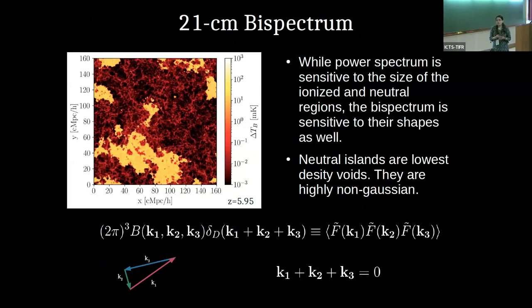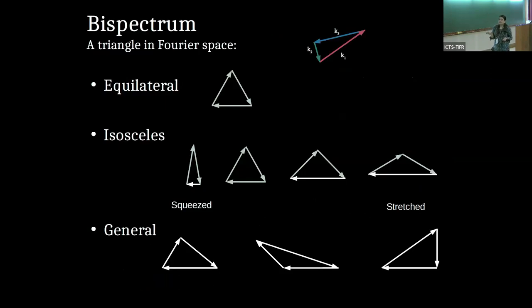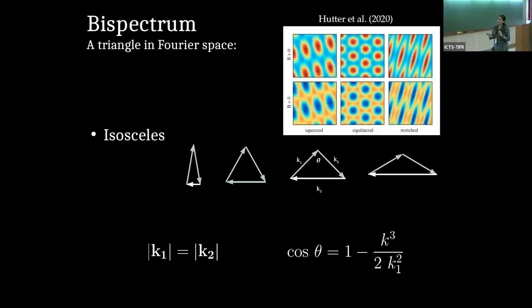So with this encouraging results, we then turn to higher statistics. Because this power spectrum is sensitive to the scales of the neutral and ionized regions, bispectrum is also sensitive to their size and shapes, which means that we will be able to extract more information about the geometry of this time period compared to power spectrum. And also, one another motivation is that towards the end of the reionization, the neutral islands which are left are the lowest density voids, which means that they are expected to be highly non-spherical, non-gaussian, and we expect them to have very unique bispectrum signature.